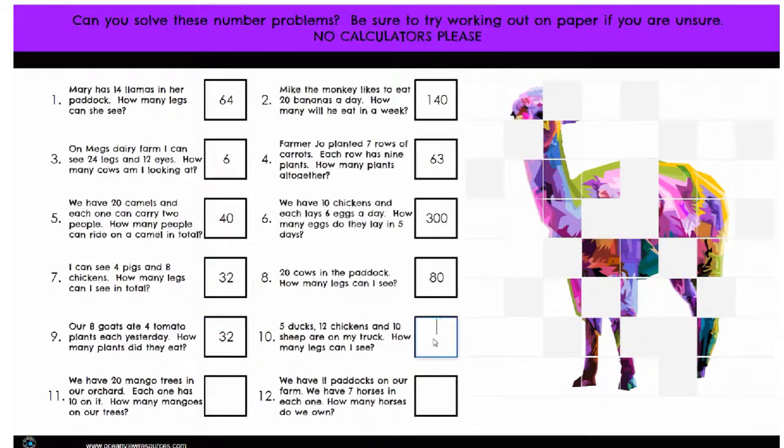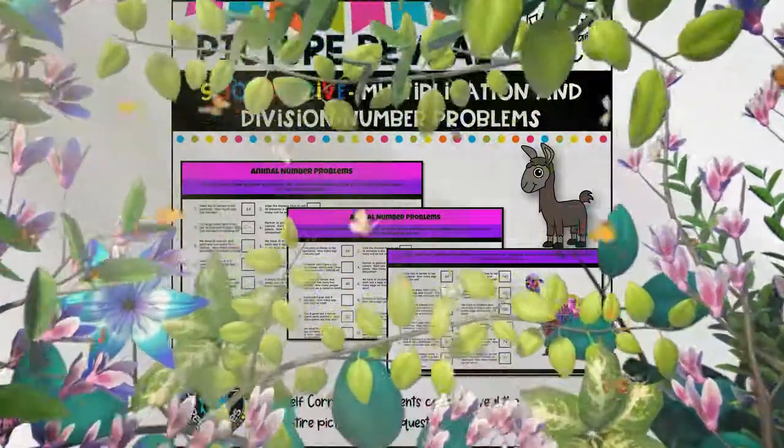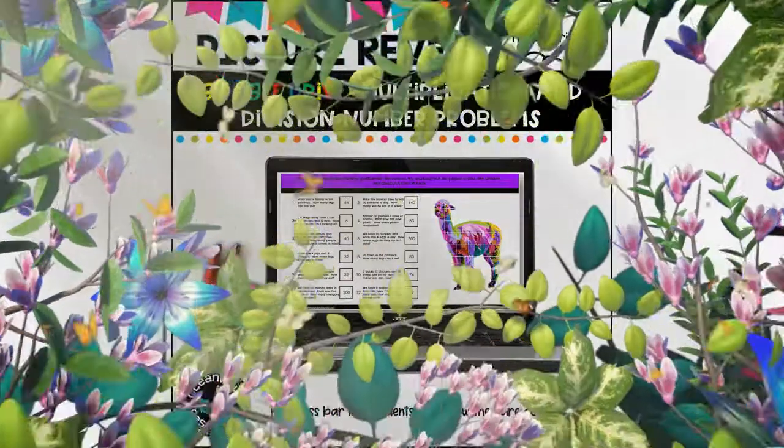How it works: This digital math activity is like a paperless color by code activity. Students enter their answers in the answer column. If the answers are correct, the digital mystery image will appear. Colors do not appear for incorrect answers.